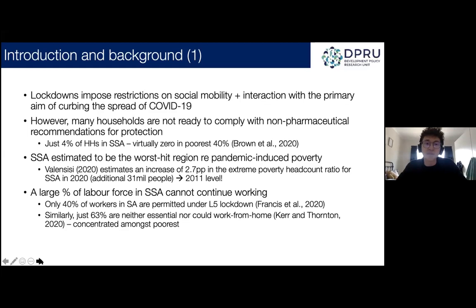Sub-Saharan Africa is estimated to be the worst hit with regards to poverty, primarily through employment transitions in the labor market. Valensisi estimated that the extreme poverty headcount — those living on less than $1.90 per person per day — would increase by 2.7 percentage points, an additional 31 million people, going back to the level of extreme poverty in 2011. These transitions in and out of poverty are largely translated through the labor market.